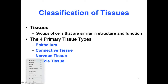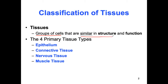When we look at tissues, remember, tissues are a group of cells that have similar structure and function. If you think back to the organization of life: chemistry, chemicals make cells, cells come together to make tissues, tissues come together to make organs, organs come together to make systems, and the 11 systems come together to make the organism.